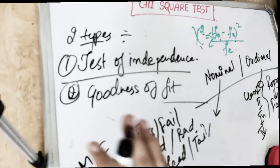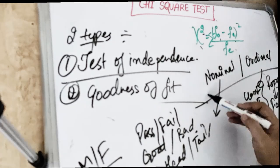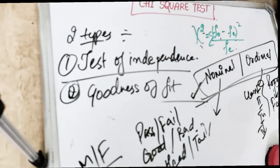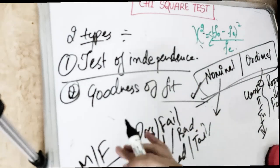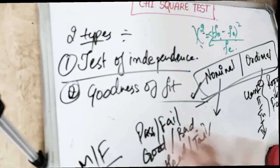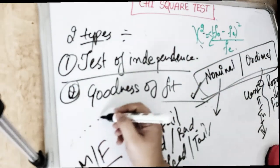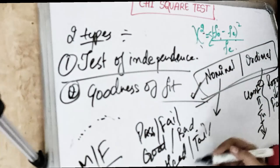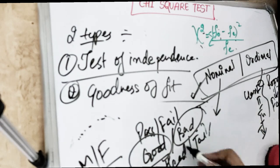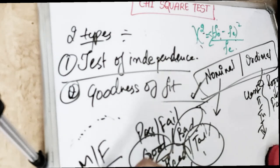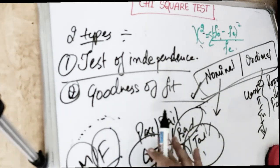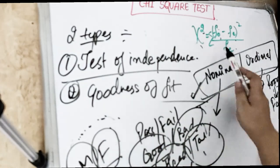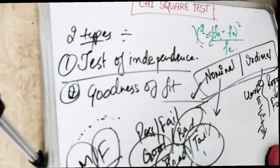The chi-square test is done when we have something to compare with expectations, so it is used with nominal or ordinal data. To perform the test, we must have an expected value and the data must be expressed in terms of frequency — that is, a count of how many times something occurs, such as how many times a comment is good or bad, how many times heads or tails comes up, or how many males versus females there are. It is used to examine the differences between frequencies in the sample.